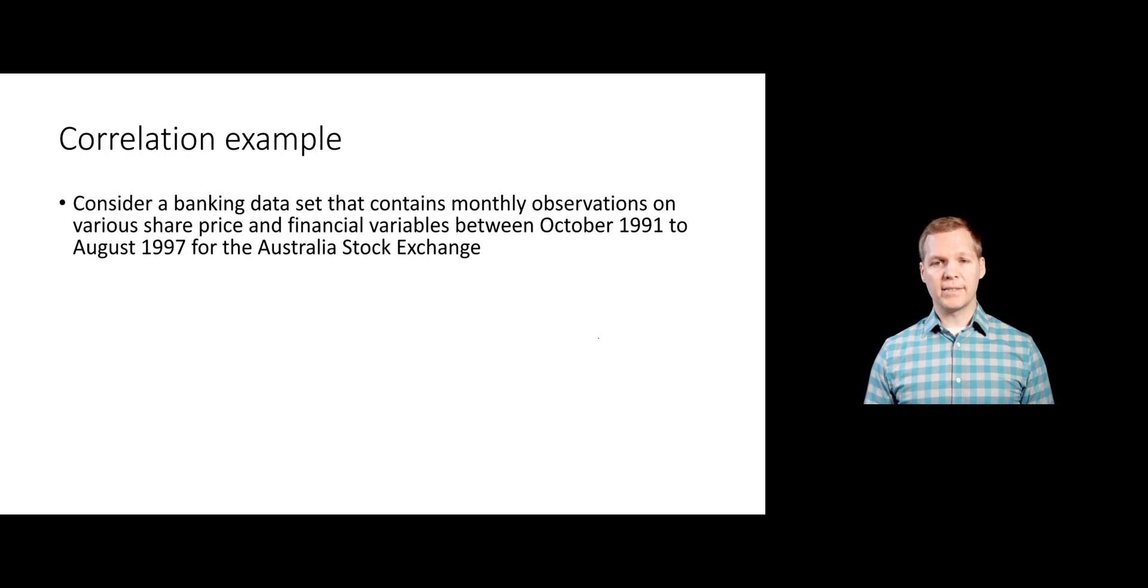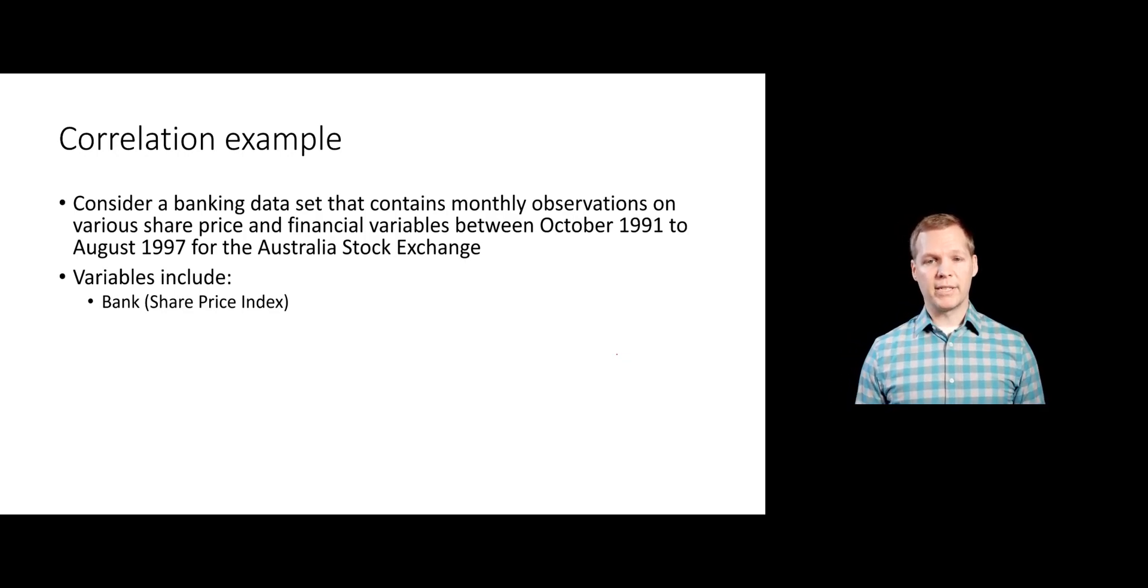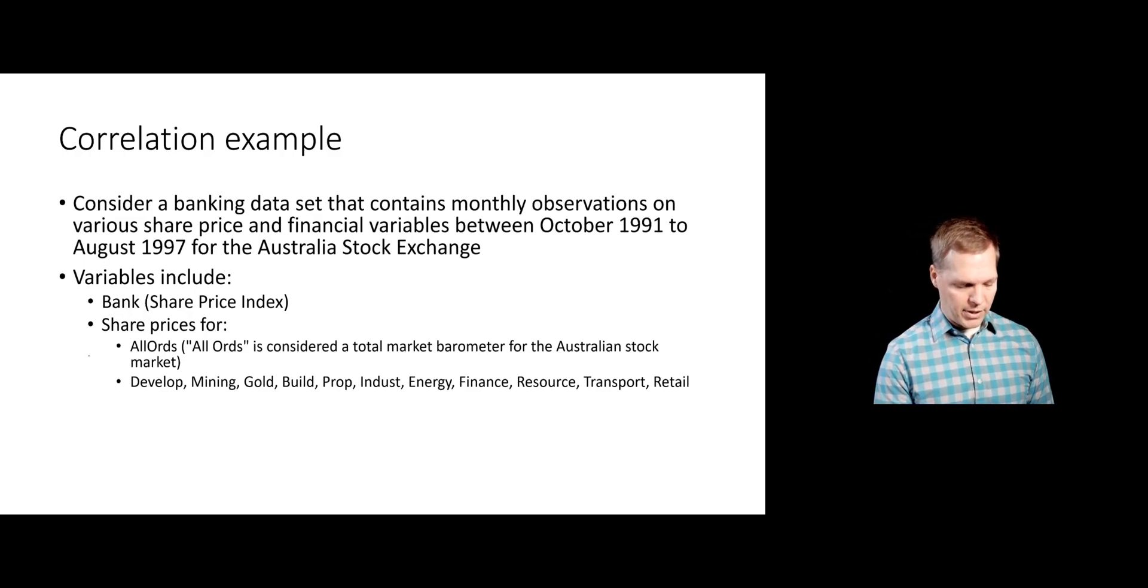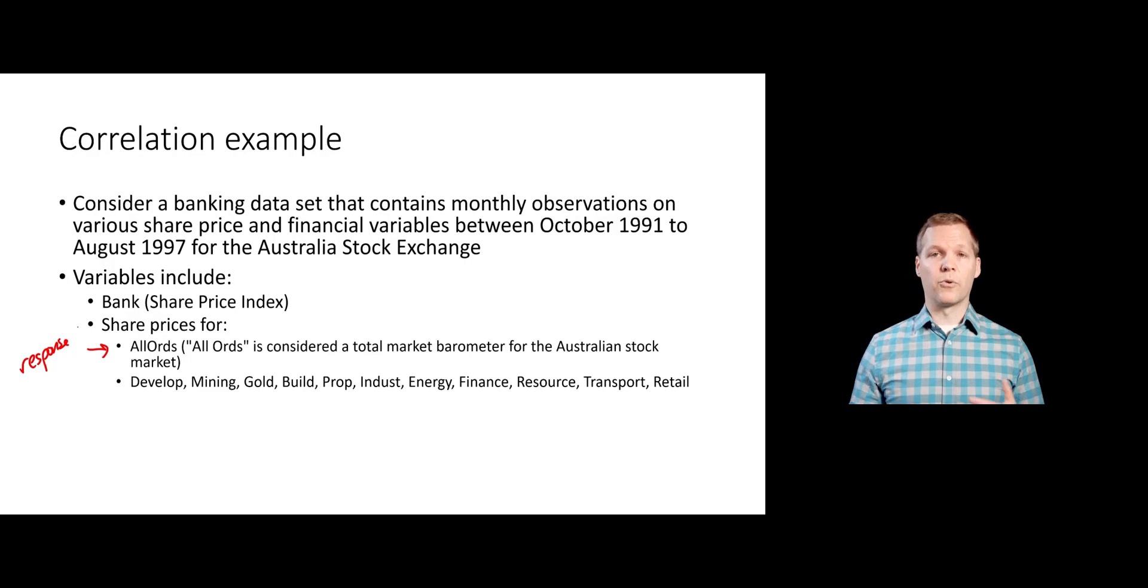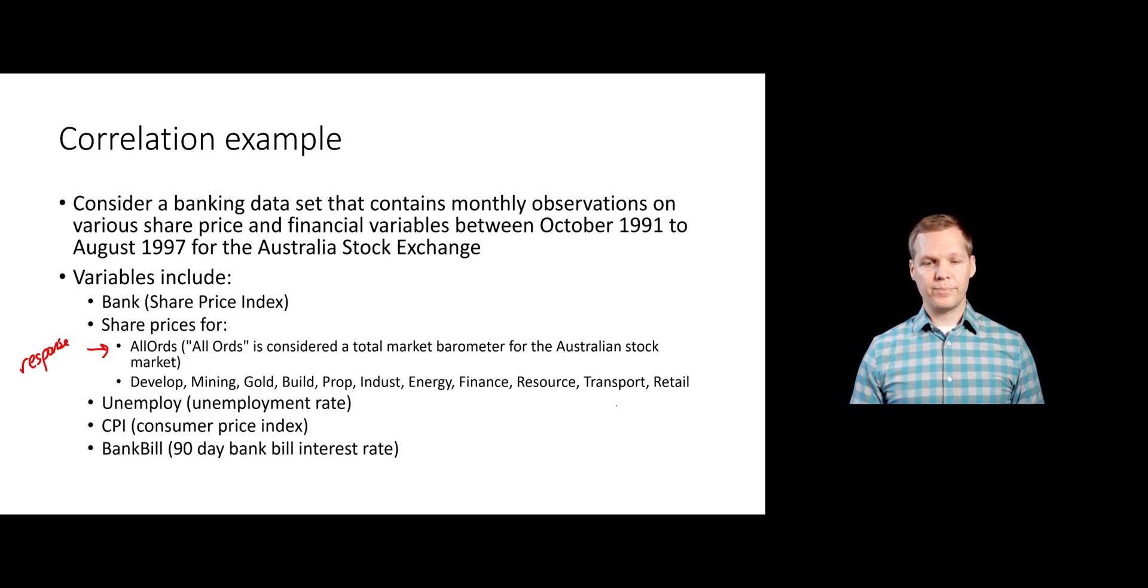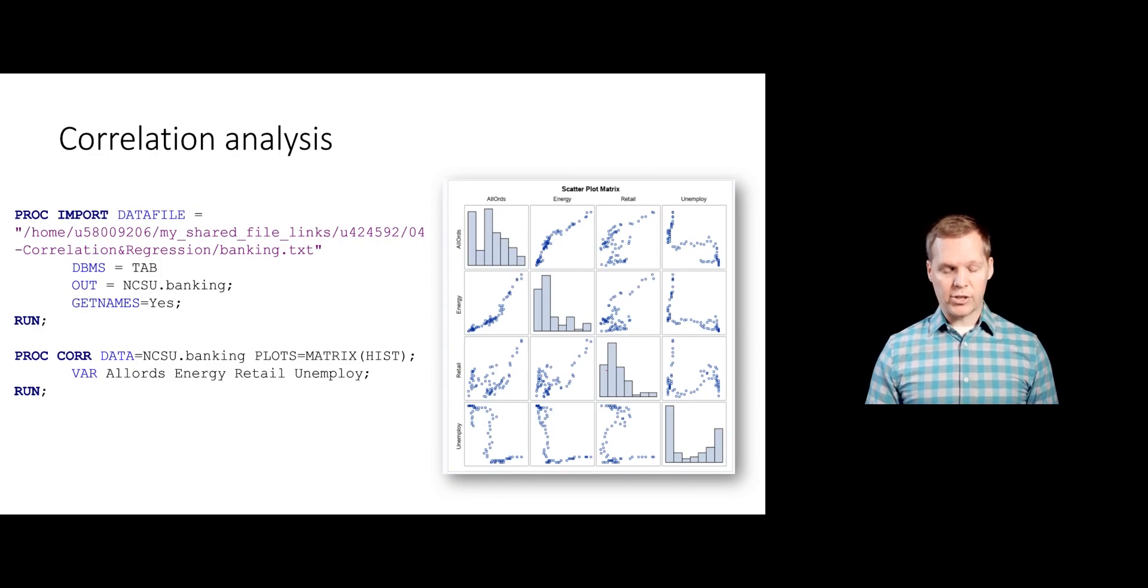We need a dataset to analyze. We're going to consider a new dataset, a banking dataset from Australia. This is information about their financial variables and their share prices from October 1991 to August 1997. The variables include the share price index for the bank, and share prices for a number of things. This is considered our response variable, although with correlation analysis you don't really need a response variable. This all ords is really a total market barometer for the Australian stock market. That's the overall one we care most about. There are a bunch of other numeric variables measured here as well, so we might try to understand the linear relationships we see between them. We will import that dataset. It's located in our shared folder, so you'll be able to use this code or something similar. I'm going to put it in my NCSU library as a dataset called banking.